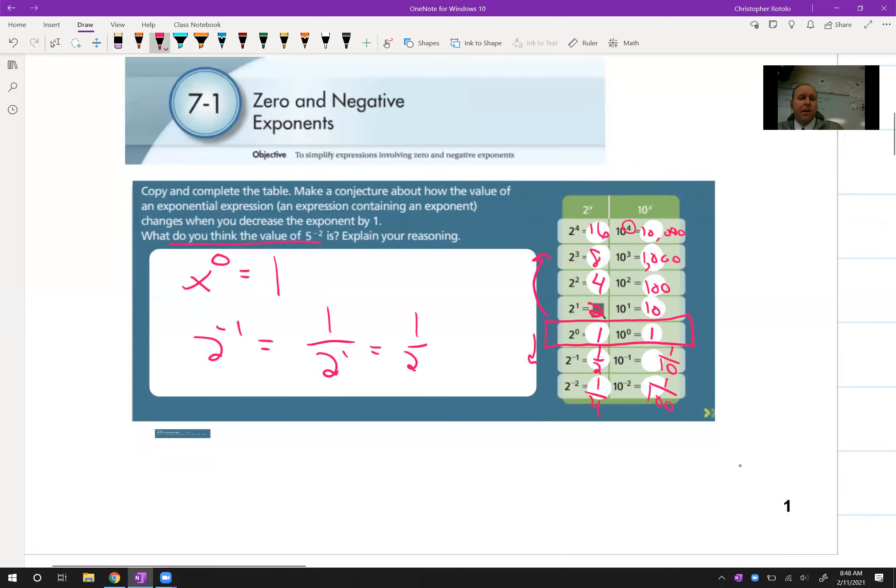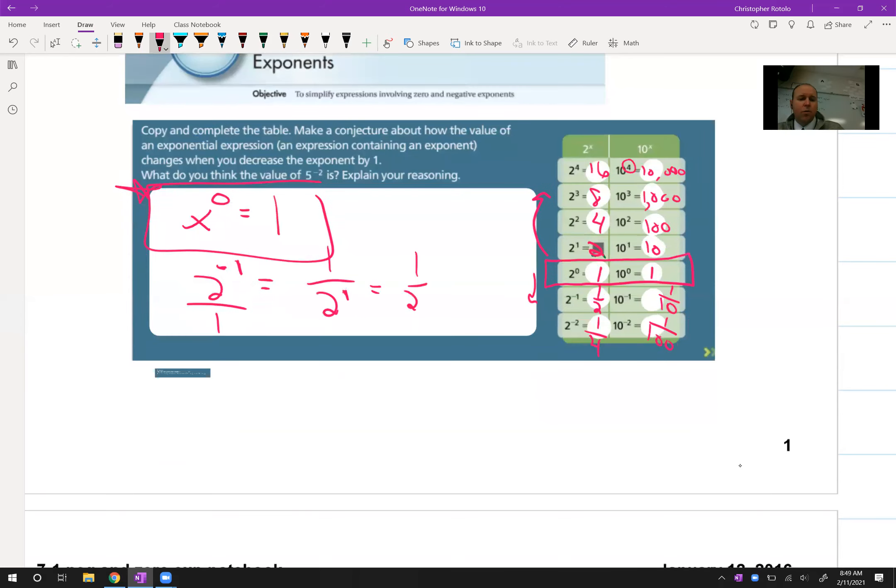Anything to the 0 power is going to become 1. And if it has a negative exponent, we're going to change its location in the fraction. So that means if I had 1 over 2 to the negative first power, this will now become 2 to the first over 1. Notice I did the reciprocal here, and then it becomes plain old 2.